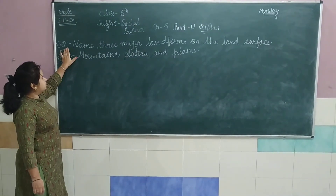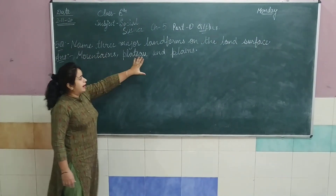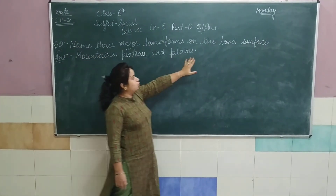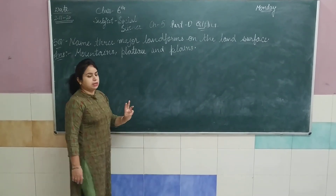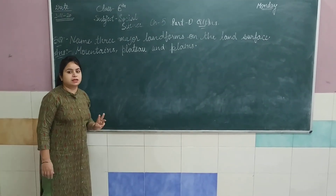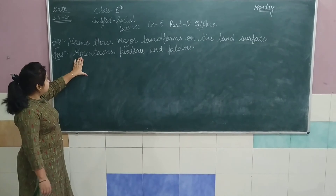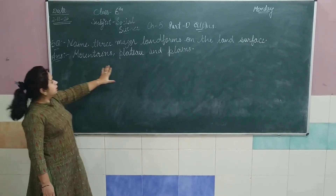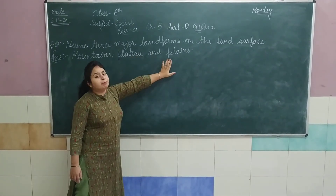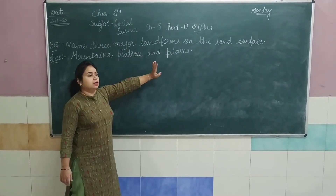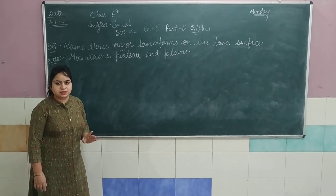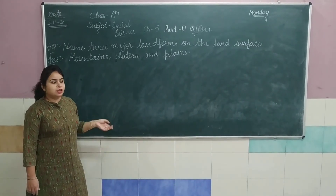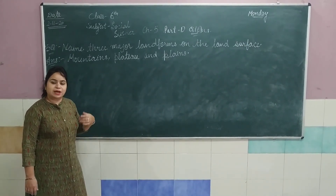Fifth question: name three major landforms on the land surface. Land surface ke upar teen landforms ke naam likhne hain. Answer: mountains, plateau, and plains. With this, we have completed part D question answers. Today you will complete it and try to learn it. Thank you very much.